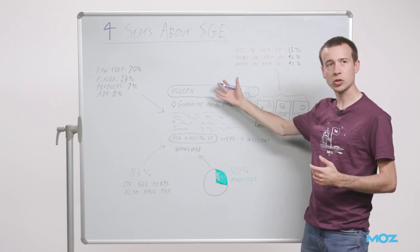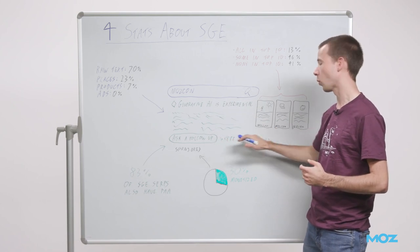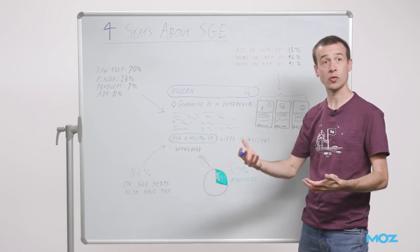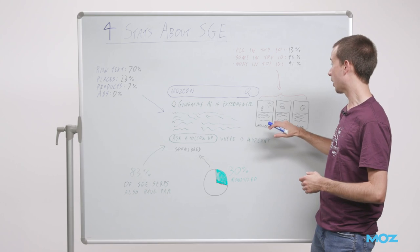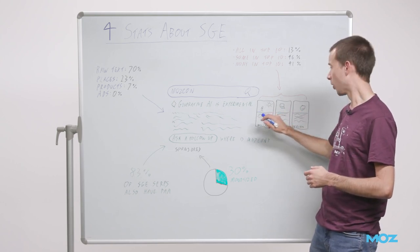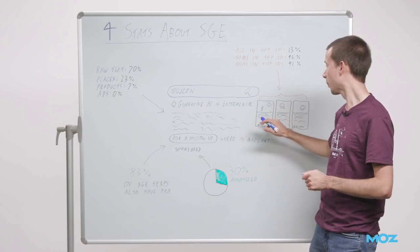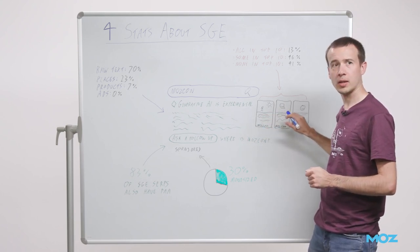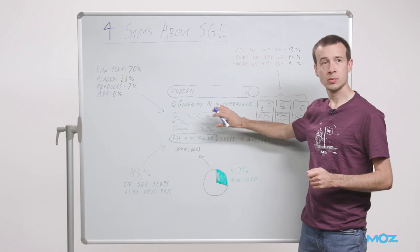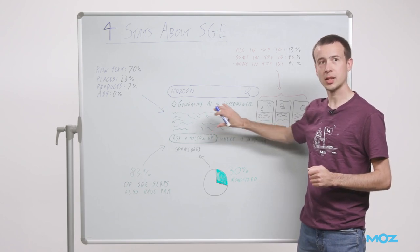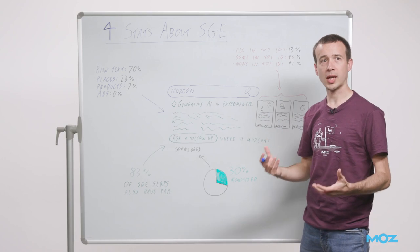Then some questions - ask a follow-up and some suggested questions. For example, I've searched for MozCon. One suggested question is 'where is MozCon?' which links through to a follow-up search. Then there are three links on the right. These look kind of like portrait organic results, but they're actually supposed to be the articles that this AI-generated text is based on.